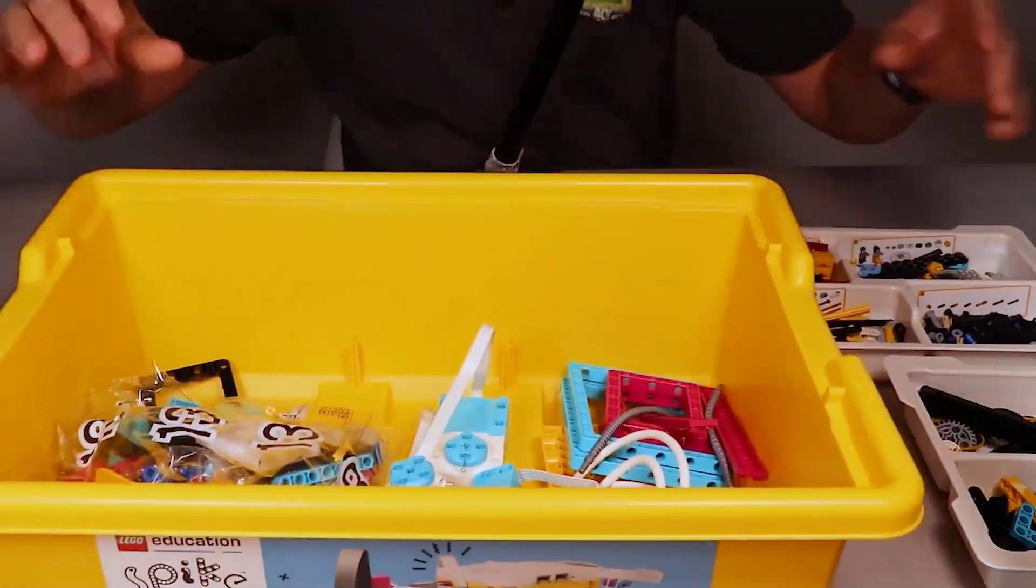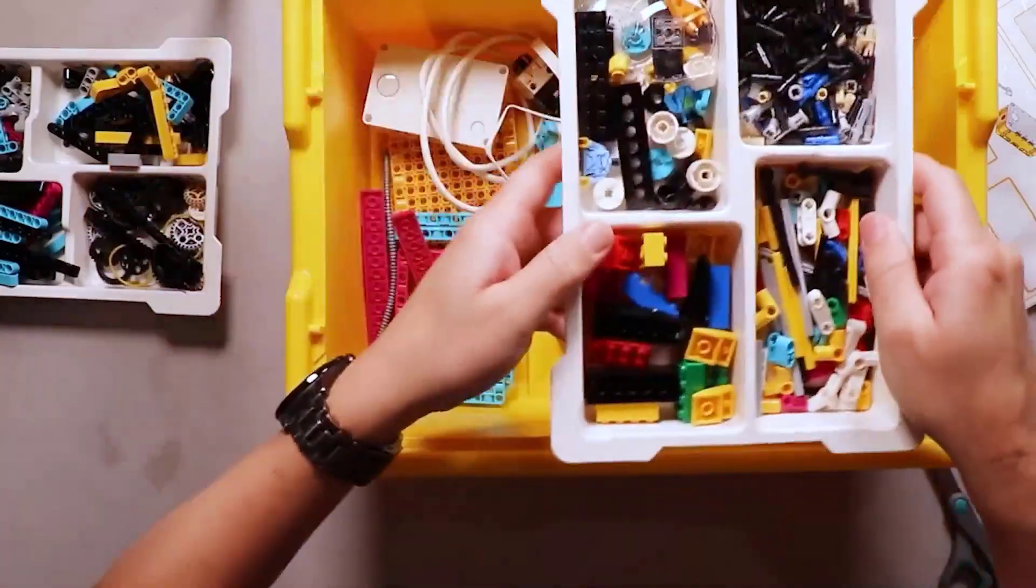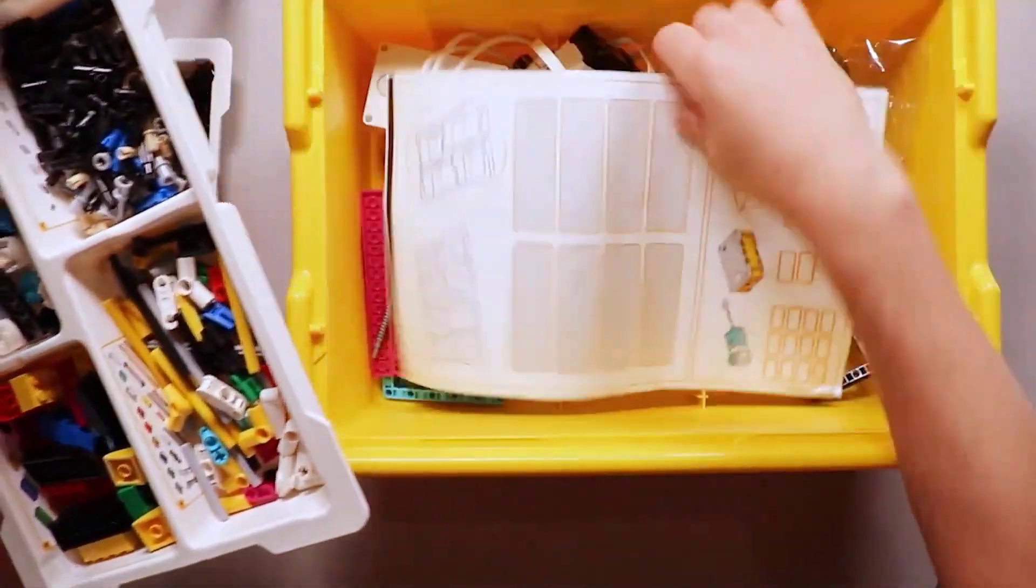That's what the bottom of your bin should look like. You've got all your big pieces. Now we are ready to put our trays right on top.